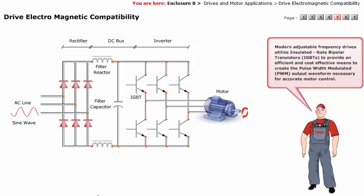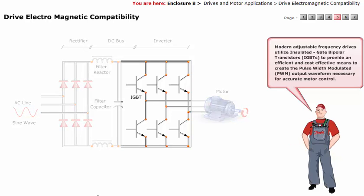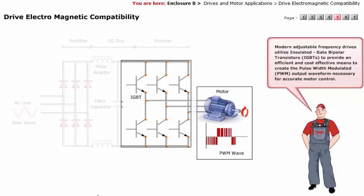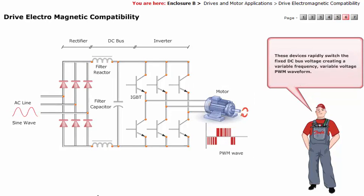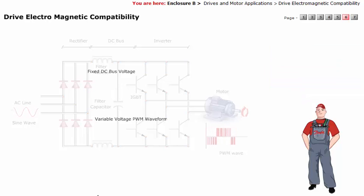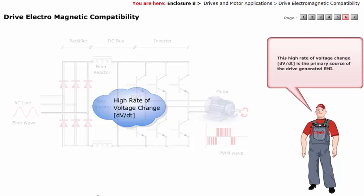Modern adjustable frequency drives utilize insulated gate bipolar transistors (IGBTs) to provide an efficient and cost-effective means to create the pulse width modulated (PWM) output waveform necessary for accurate motor control. These devices rapidly switch the fixed DC bus voltage, creating a variable frequency, variable voltage PWM waveform. This high rate of voltage change, dV/dT, is the primary source of the drive-generated EMI.